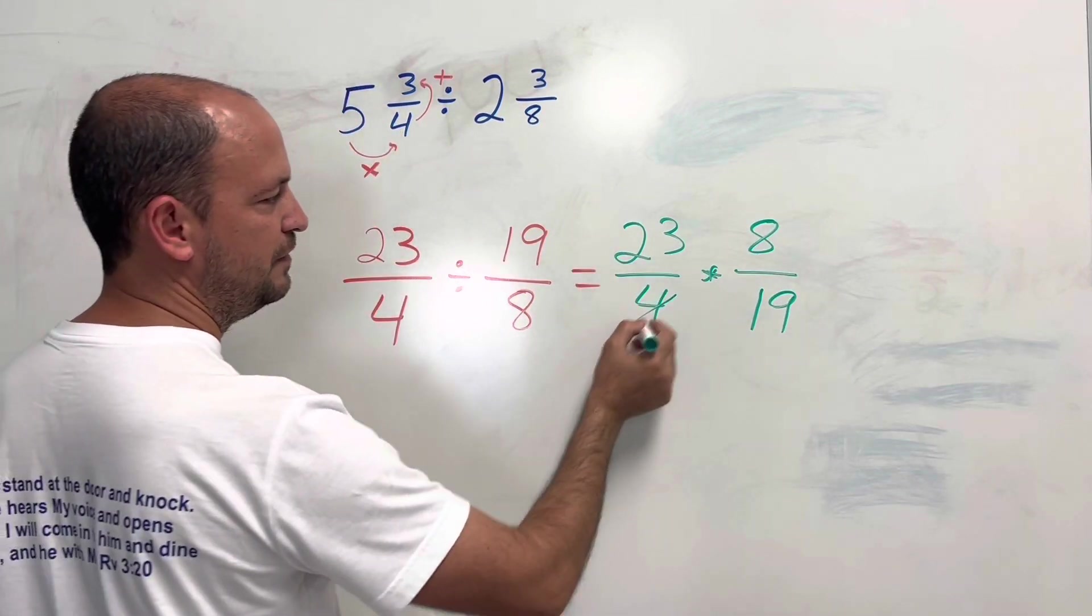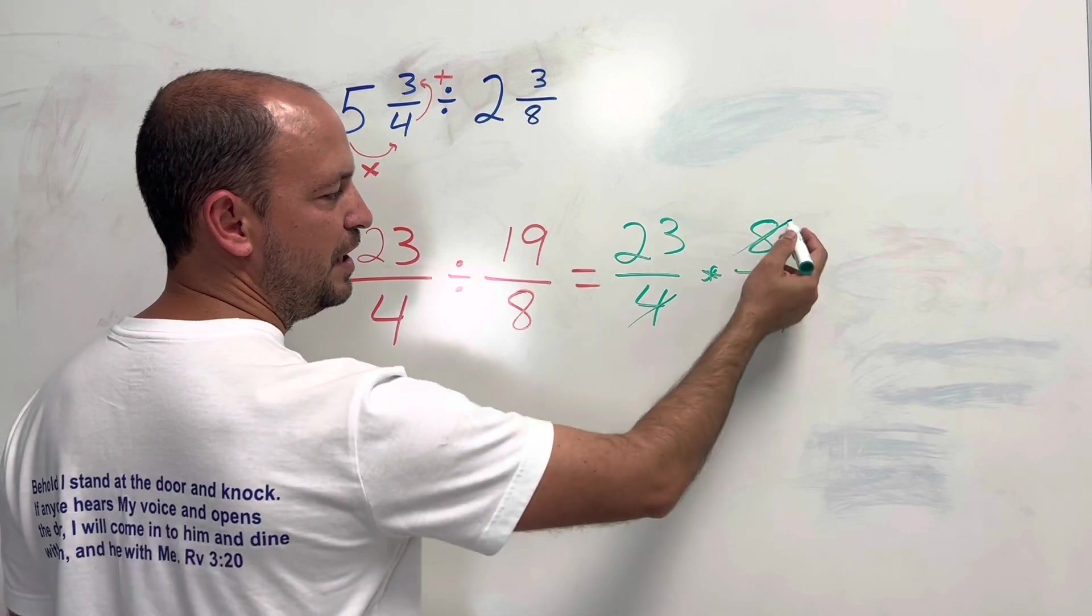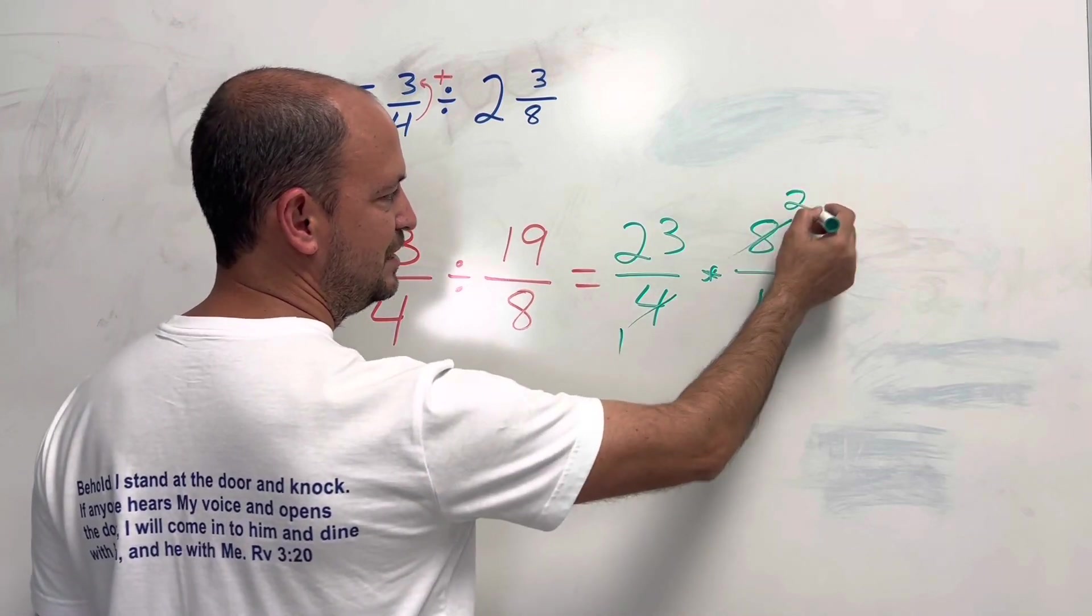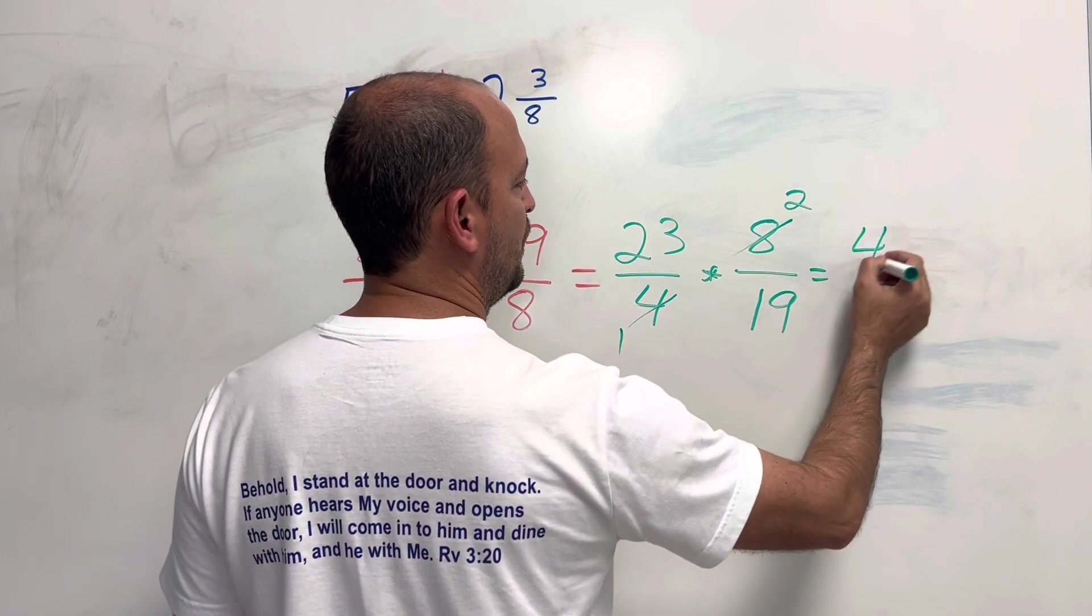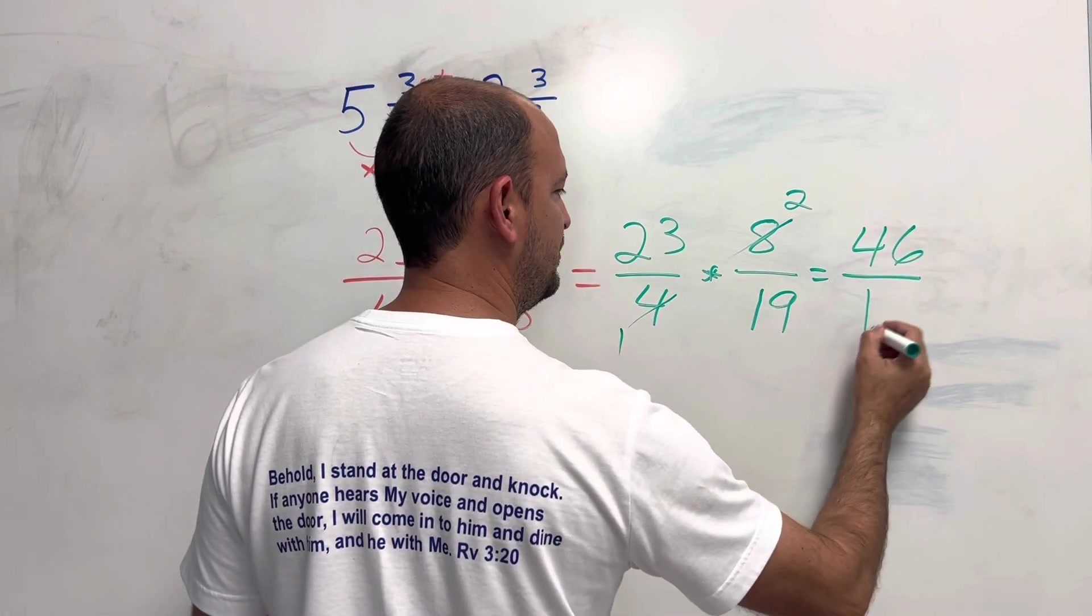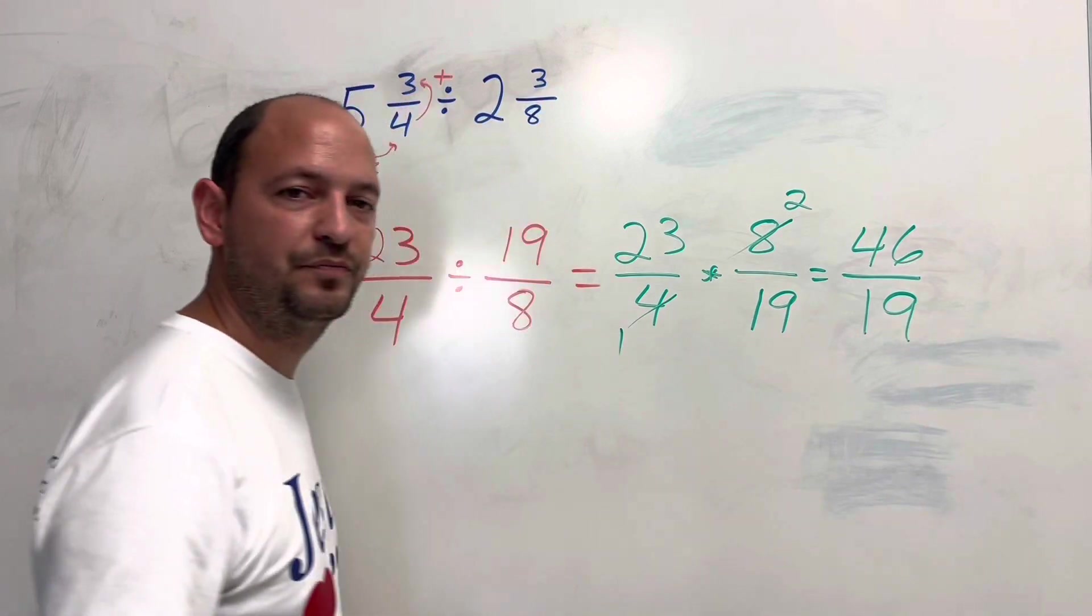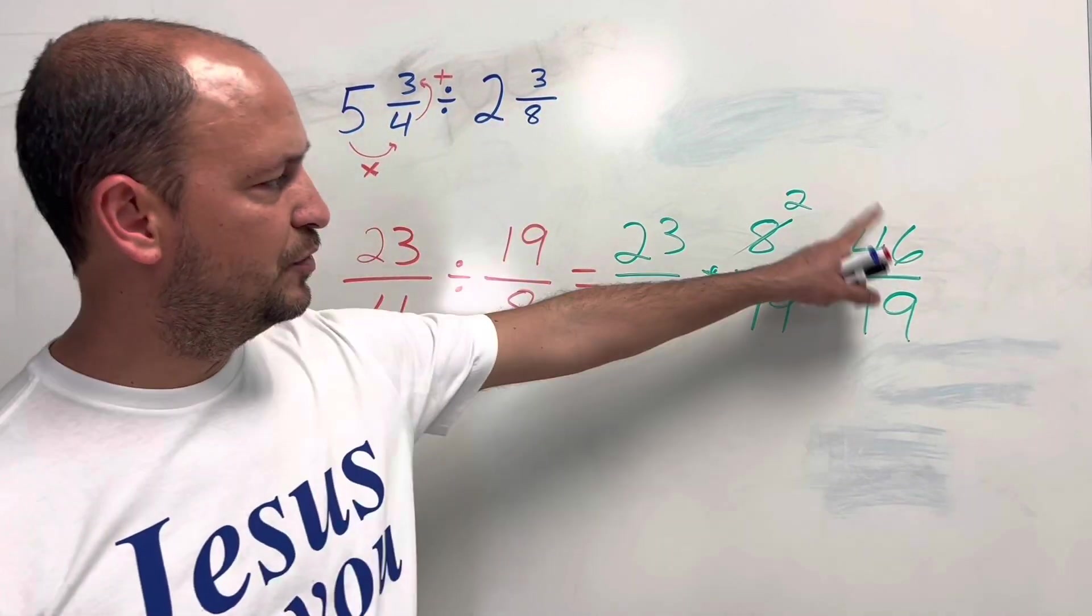Now here we can simplify the 4 with the 8. Divided by 4, this is 1, this is 2. So the answer is 46 divided by 19. Now we want to change this into a mixed number.